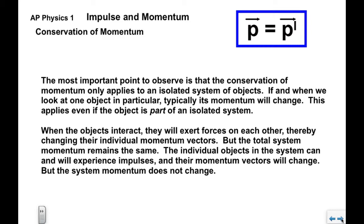The individual objects in the system can and will experience an impulse, and their momentum vectors will change, but the system momentum will not. It's a very key point to the conservation of momentum.